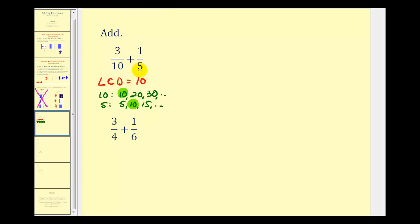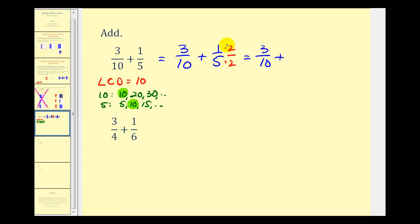So we want both of these fractions to have a denominator of ten. The first one already has a denominator of ten, so we'll leave that the same. For the second fraction of one-fifth, since five times two is equal to ten, we'll multiply both the numerator and denominator by two, which is the same as multiplying by one. This gives us three-tenths plus two-tenths, which is equal to five-tenths. But we're not done because five-tenths can simplify. We can write five as one times five and ten as two times five, so the fives simplify to one, giving us a sum of one-half.